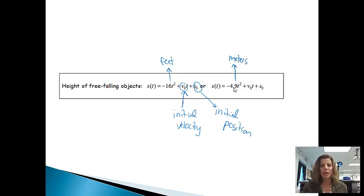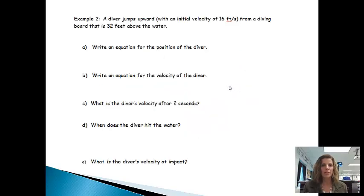So let's go ahead and do an example. A diver jumps upward with an initial velocity of 16 feet per second from a diving board that is 32 feet above the water. This first question asked me to write an equation for the position of the diver. So I'm going to first of all write down that position formula. We're working with feet so I know to use the feet formula. So it's going to be negative 16t squared plus v sub zero t plus s sub zero.